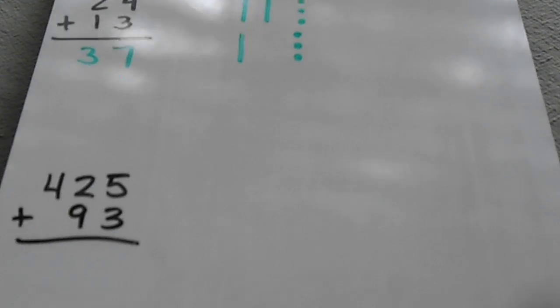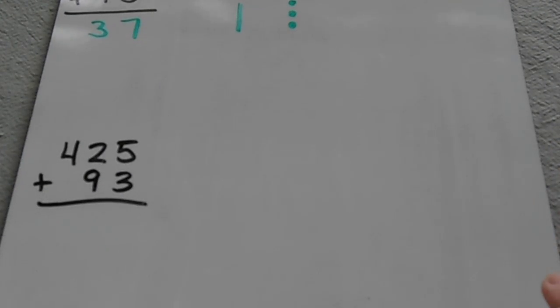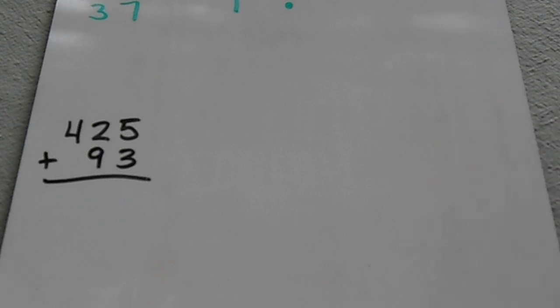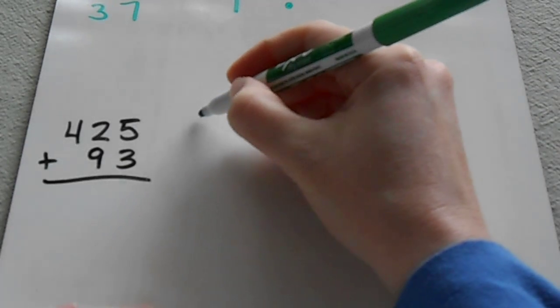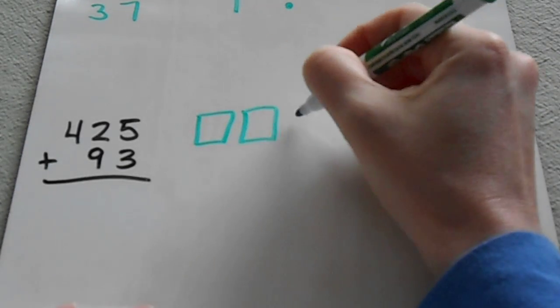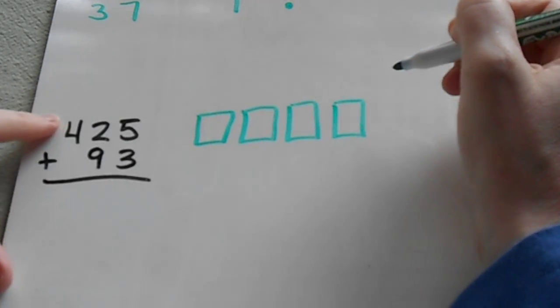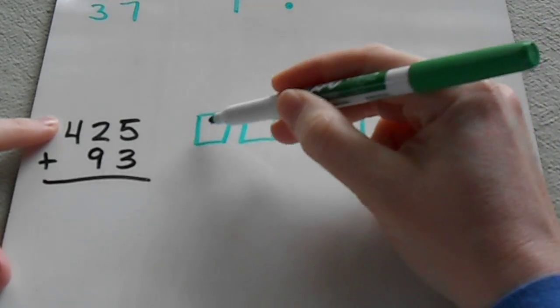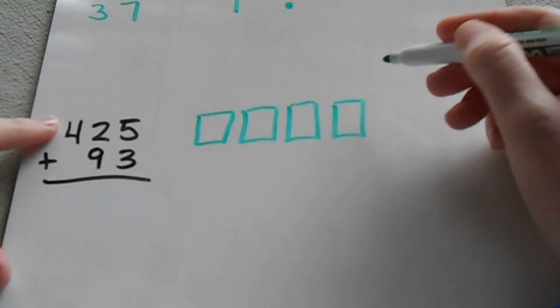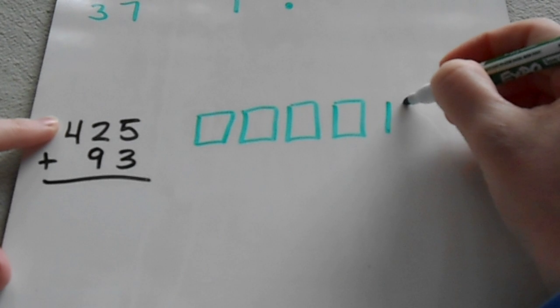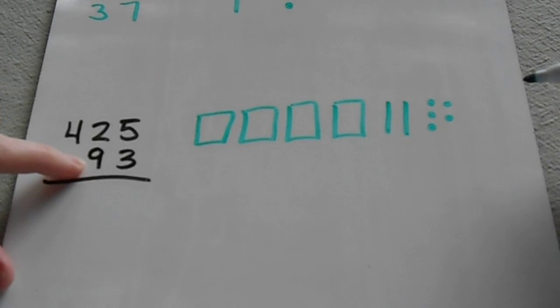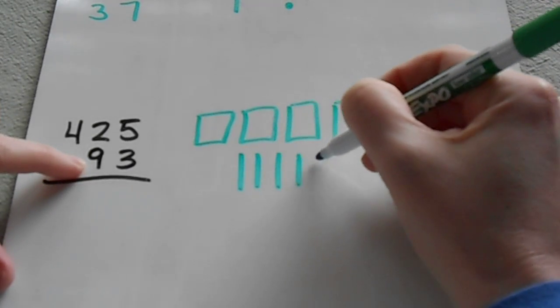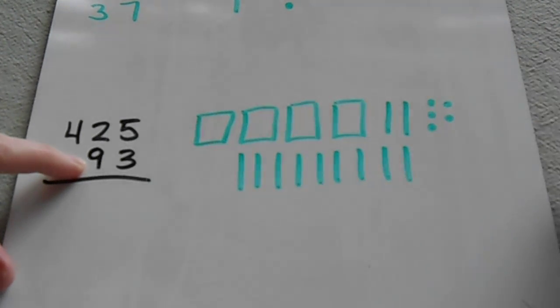In that problem we didn't have any regrouping, but in this problem we do. I've got 425 plus 93. I'm just going to draw out my base-10 blocks to show you how you can add these up using the visuals. My first number is 400, so I drew the bigger boxes because they represent the hundreds place. Then I have 2 tens and 5 ones. For my second number, I've got 9 tens and 3 ones.